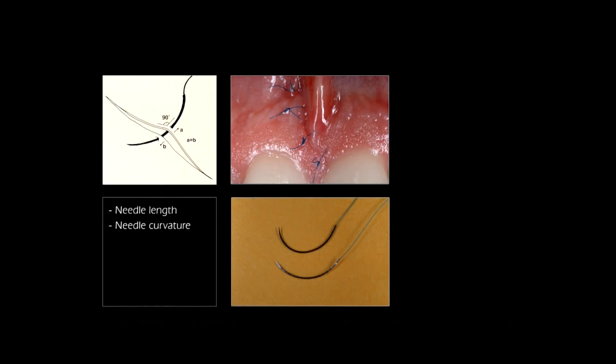Regarding the needle: in periodontal surgery we typically work with three-eighths curvature needles, which allow a right-angled entry and exit in the tissues. When working close to teeth and suturing releasing incisions, we need a needle with more curvature — either a half-circle curvature or an asymptotically curved needle that changes curvature along each segment of the bow.